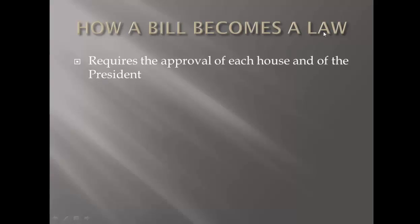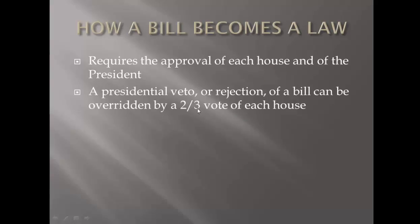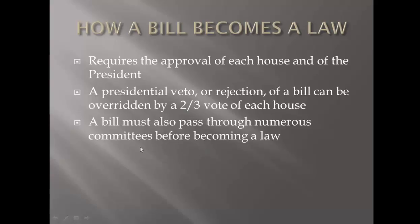For a bill to become a law, it requires the approval of the House of Representatives, the Senate, and the president — all three have to agree. If the president doesn't like a particular law, he has the right to veto it — to reject it and not sign it. But Congress gets one more shot: if they vote again with a two-thirds vote — way more than a majority — it still becomes a law. The bill must also pass through numerous committees before becoming a law. Committees are where the grunt work is done — they work on language, decide if the law is worth it.